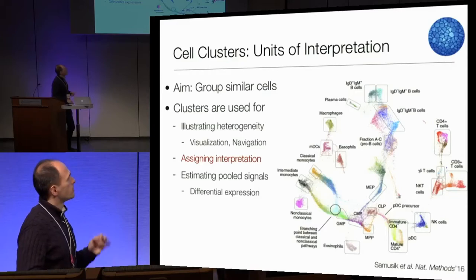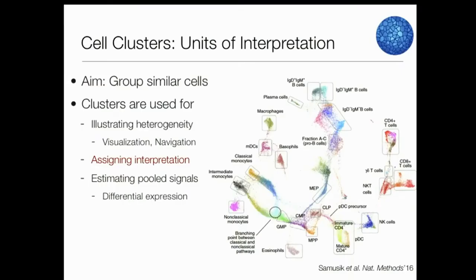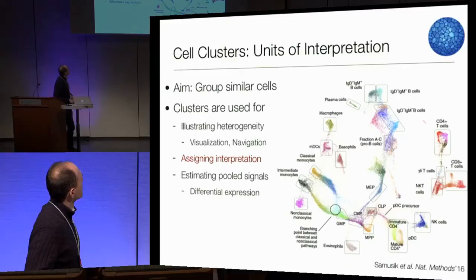Here you see all these sub-populations, all these clusters labeled. Typically when people go through these single-cell datasets, the labeling is done in terms of clusters, even if they represent parts of a continuous trajectory. This is actually CyTOF data. For the purposes of this talk, I'll focus on single-cell RNA-seq, because I think the initial iteration will have a lot of that data.